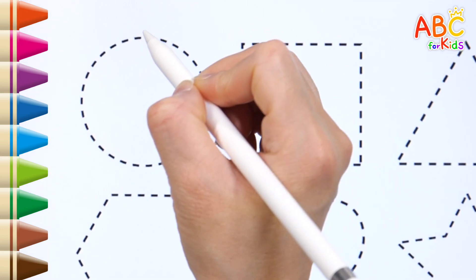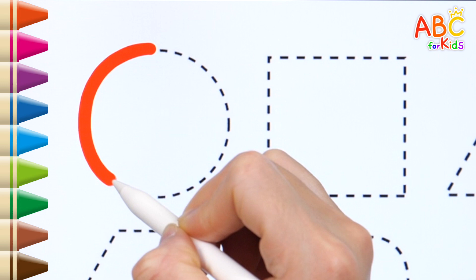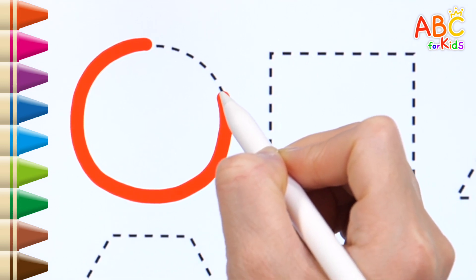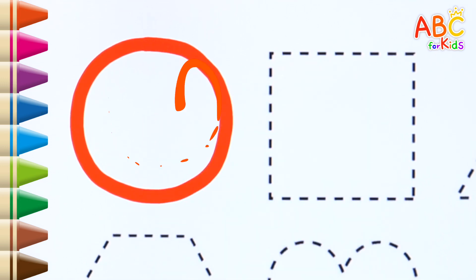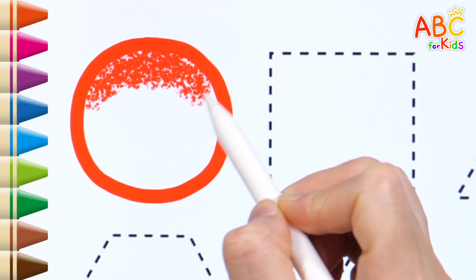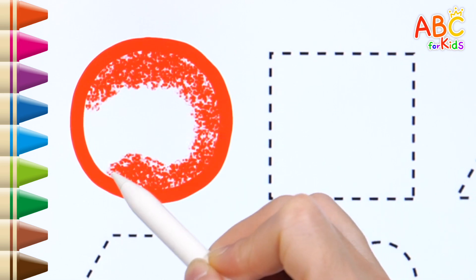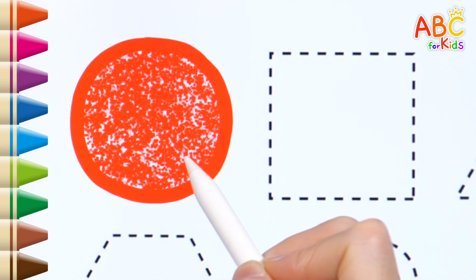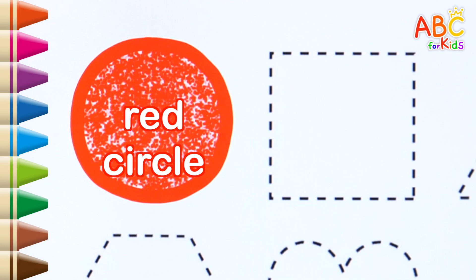Let's draw a shape along the dot. What shape is it? That's right, it's a circle. Red. It's a red circle.